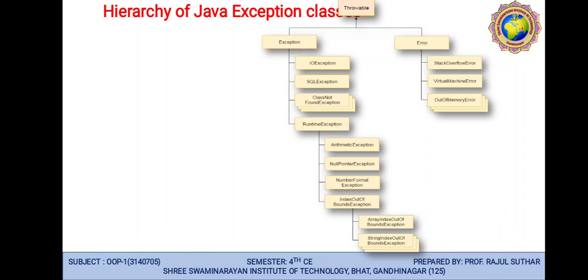VirtualMachineError occurs when your memory is less than what the operating system and program require. OutOfMemoryError occurs when you run a program — for example, working with a document file where the number of pages increases so much that RAM cannot handle it. If a Word file covers 1000 pages and you keep adding more, your RAM becomes fully occupied and you cannot access other applications.